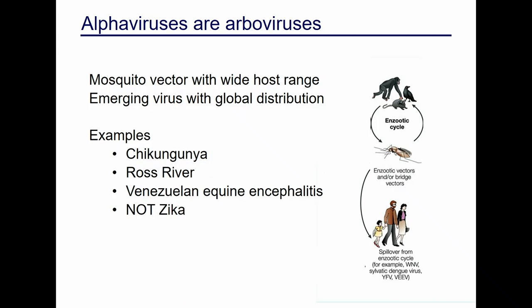They are arboviruses, transmitted by arthropods — most likely mosquitoes. This is important in the context of assembly and disassembly: the virus has two different hosts, a mammalian host and a mosquito host. As we compare and contrast different mechanisms, we want to know whether those are conserved in the two different hosts or are different.